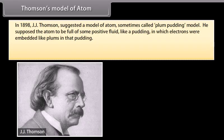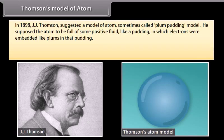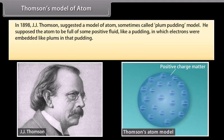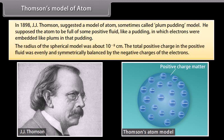Thomson's model of atom. In 1898, J.J. Thomson suggested a model of atom sometimes called plum pudding model. He supposed the atom to be full of some positive fluid, like a pudding, in which electrons were embedded like plums in that pudding. The radius of this spherical model was about 10^-8 cm. The total positive charge in the positive fluid was evenly and symmetrically balanced by the negative charges of the electrons.